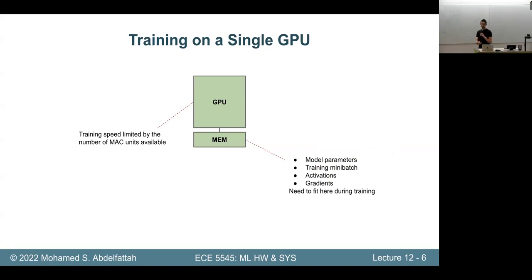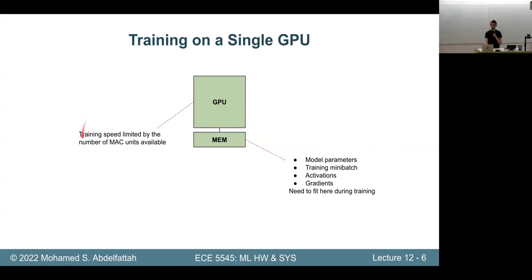If all of that doesn't fit, you need to go to multiple GPUs — you simply can't train that model otherwise. And if your training is too slow, like it will take years, you also have to go to multiple GPUs. These are two clear reasons to use multiple GPUs.